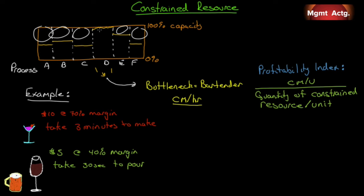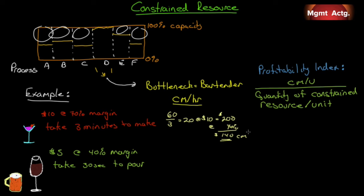We'll assume the bartender is busy every minute they're on. If selling the $10 fancy drinks, each takes 3 minutes to make. So in 60 minutes, the bartender can make 20 drinks at $10 each — generating $200 in sales. At a 70% margin, that's $140 in contribution margin per hour by selling these fancy drinks.